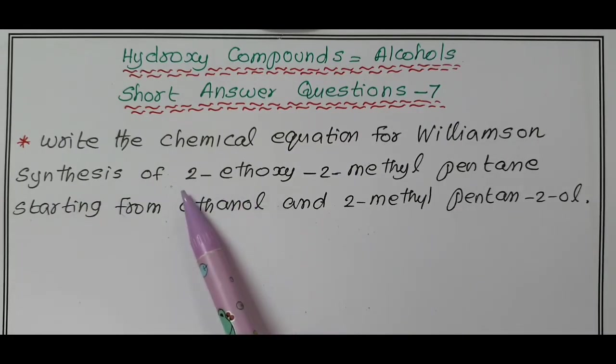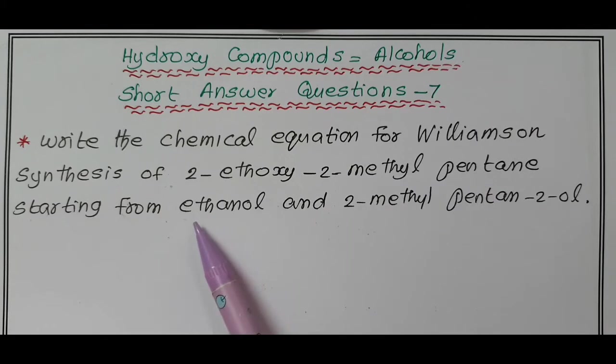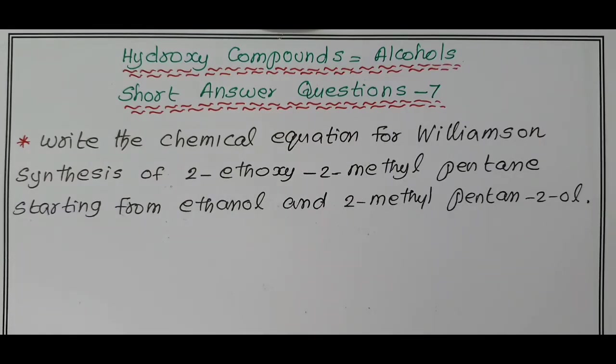We have to prepare this compound by Williamson ether synthesis by using the reactant ethanol and 2-methyl-pentane-2-ol. Now, first, I would like to write the molecular formula for 2-ethoxy-2-methyl-pentane.